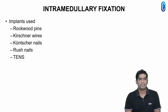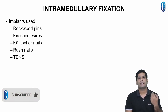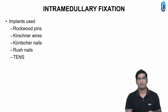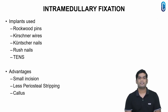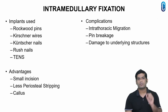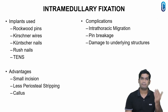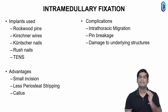We come to intramedullary fixation. The implants used include Rockwood Pins, K-Wires, K-Nails, Rush Nails, or Titanium Elastic Intramedullary Nails. The advantages of intramedullary fixation include a smaller skin incision, less periosteal stripping, and relative stability which allows callus formation. However, frequent complications such as intrathoracic migration, pin breakage, or damage to the underlying structures limit the usage of intramedullary fixation.